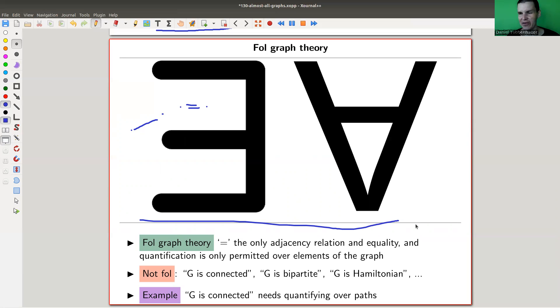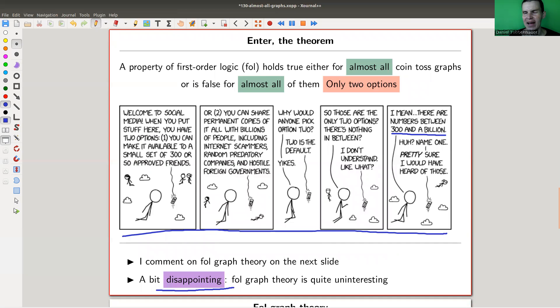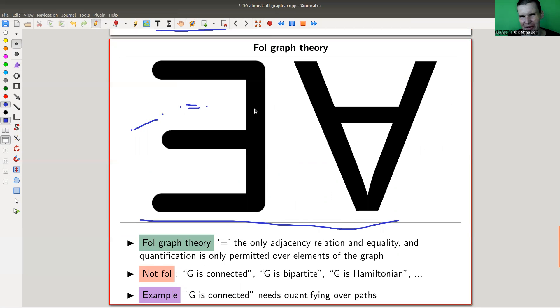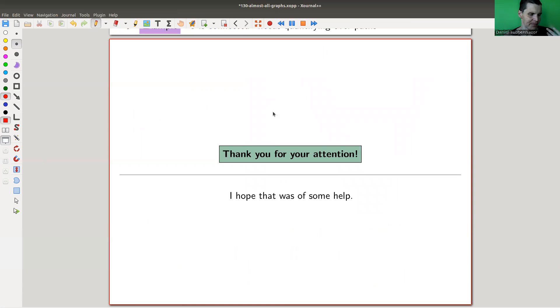There are many statements which are not first-order logic. Even something simple like 'G is connected' - because you would need to quantify over paths. You can't do that if you only quantify over vertices. Although this theorem sounds disappointing and surprising, it's more about first-order logic being quite weak. You really want second-order or higher-order logic. Then you get more interesting statements. Standard graph-theoretical statements like connected, bipartite, or Hamiltonian are not first-order logic, so they're not covered by this theorem.